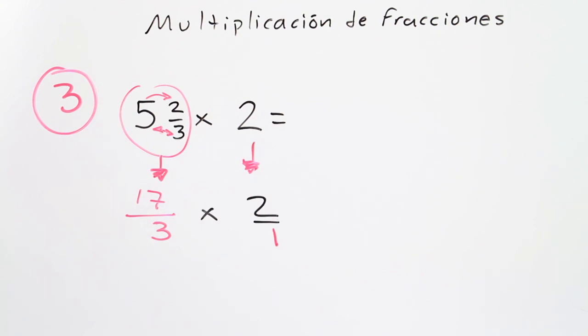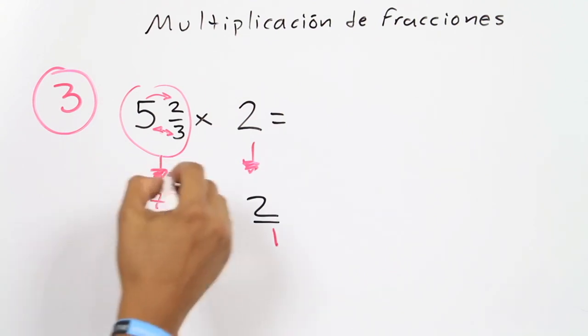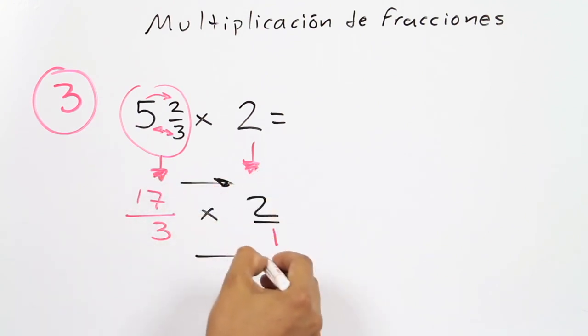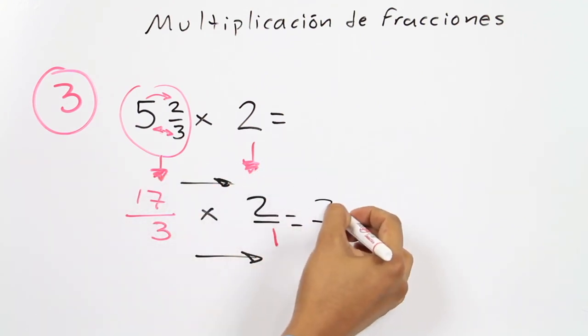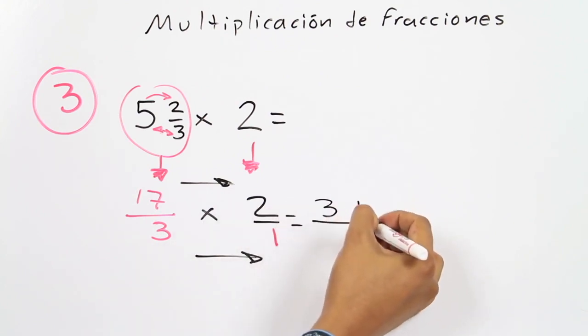So with two simple fractions, we just do the same procedure of multiplication. That is multiply all the top numbers, and then multiply all the bottom numbers. In this case, 17 times 2 equals 34 over 3 times 1 equals 3, which is 34 over 3.